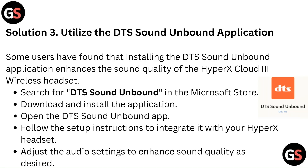Solution 3: Utilize the DTS Sound Unbound application. Some users have found that installing DTS Sound Unbound enhances the sound quality of the HyperX Cloud 3 wireless headset. Search for DTS Sound Unbound in the Microsoft Store, download and install the application, then open it and follow the setup instructions to integrate it with your HyperX headset. Adjust the audio settings to enhance sound quality as desired.